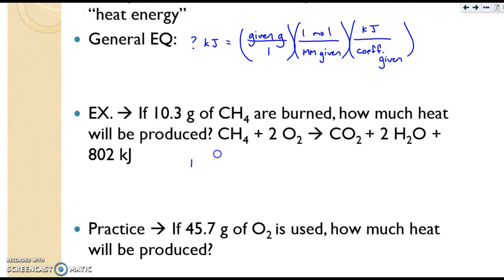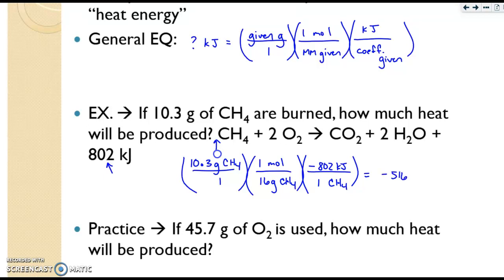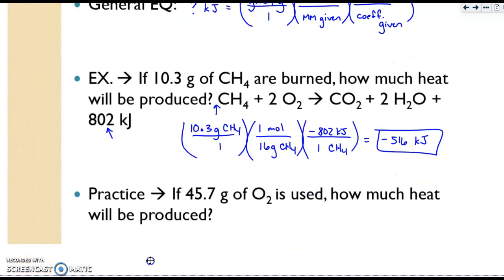Let's do the example to make this make sense. So you're going to start with your 10.3 grams of your CH4 over 1. Then it's 1 mole divided by its molar mass of 16 grams. Then the kilojoules in the problem are 802. They're in the product, so it should be negative 802. And then the coefficient of CH4 is 1. So you would go ahead and solve that problem, and you should get right around negative 516. At this time, using the same balanced equation, please pause the video and try the practice problem.